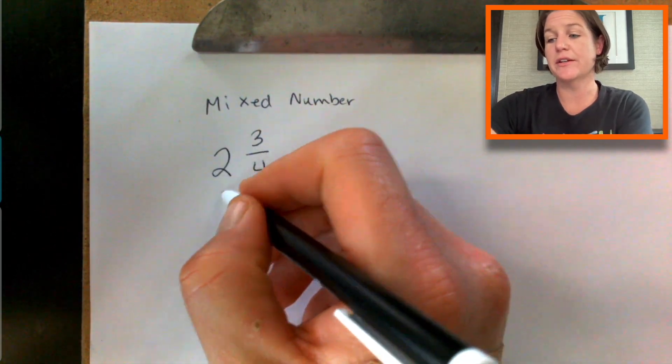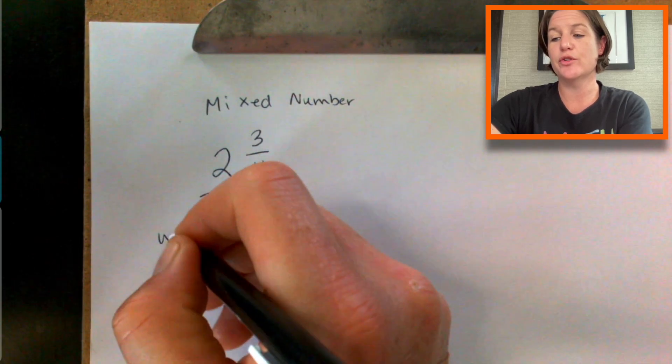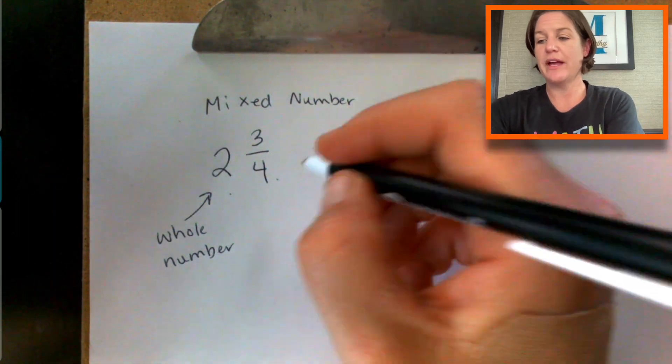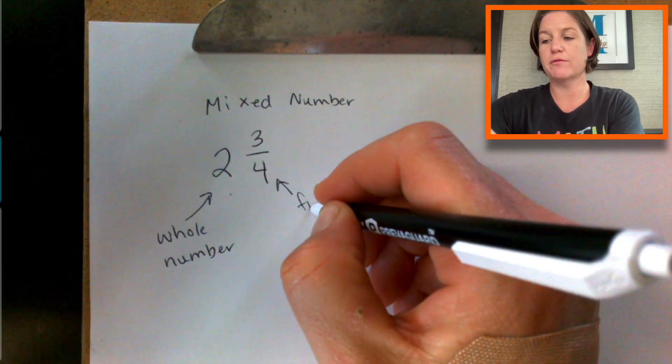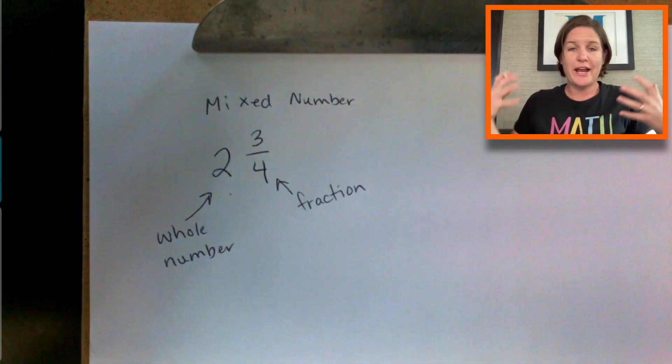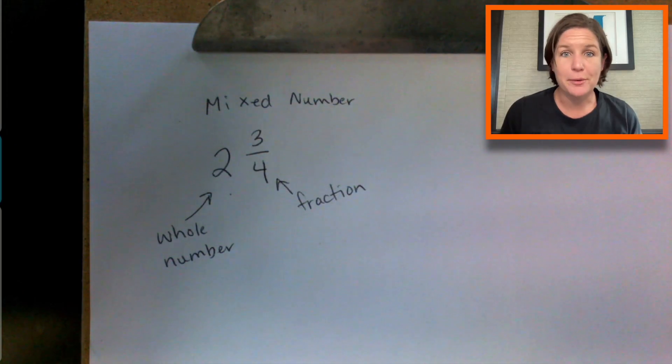So this is called a mixed number. And why is it called a mixed number? Well, we have two parts here. For the first part, we have our two, which is a whole number. And then over here we have three fourths, which is our fraction. We've kind of mixed it up by combining the whole number and the fraction. We now have a mixed number.